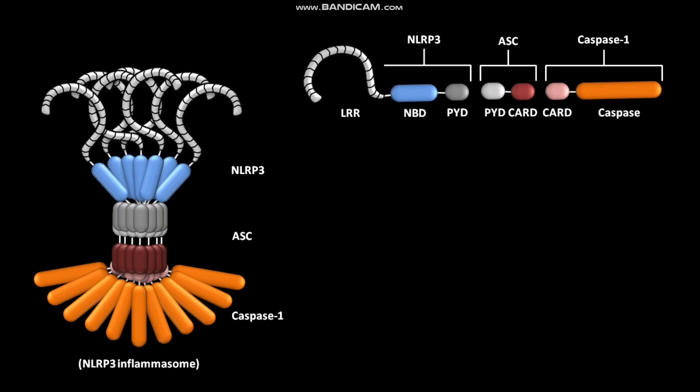During assembly of the NLRP3 Inflammasome, the proteins NLRP3, ASC, and Caspase-1 aggregate. The homotypic domains of NLRP3, ASC, and Caspase-1 interact with each other. Specifically, the PYD domain of NLRP3 interacts with the PYD domain of ASC, and the CARD domain of ASC interacts with the CARD domain of Caspase-1.